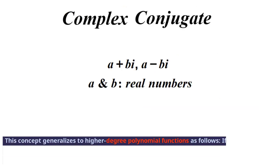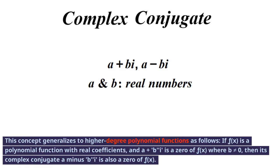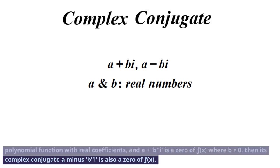This concept generalizes to higher-degree polynomial functions as follows: If f(x) is a polynomial function with real coefficients, and a plus bi is a zero of f(x) where b does not equal zero, then its complex conjugate a minus bi is also a zero of f(x).